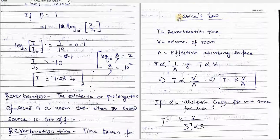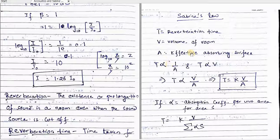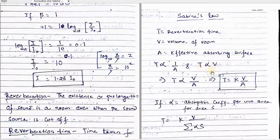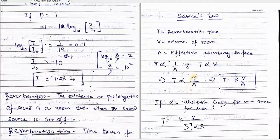This is the relation between reverberation time, volume of the room, and the effective absorbing surface. If I have a closed room of volume V, the reverberation time depends on the effective absorbing surface. The sound will be absorbed by the surfaces of the room — such as partitions, walls, and other materials. The reverberation time is inversely proportional to the area of the absorbing surface and directly proportional to the volume of the room. Therefore, combining these two, the reverberation time is directly proportional to V by A.